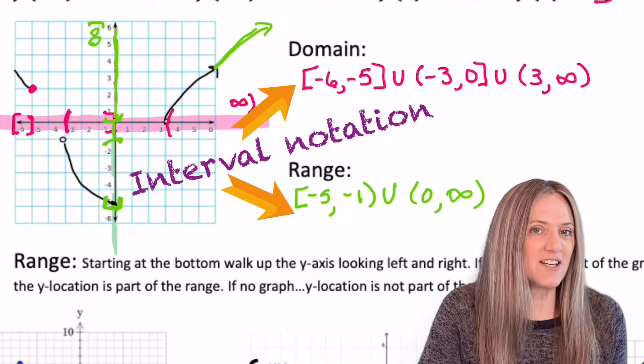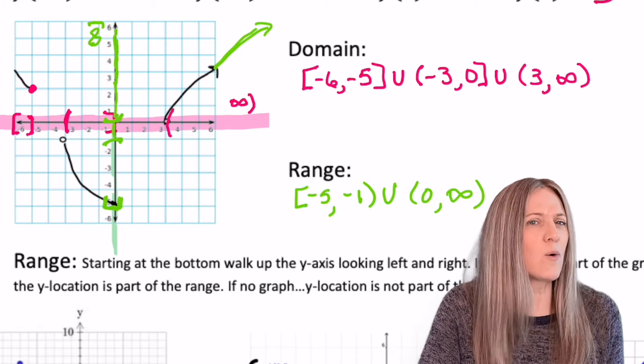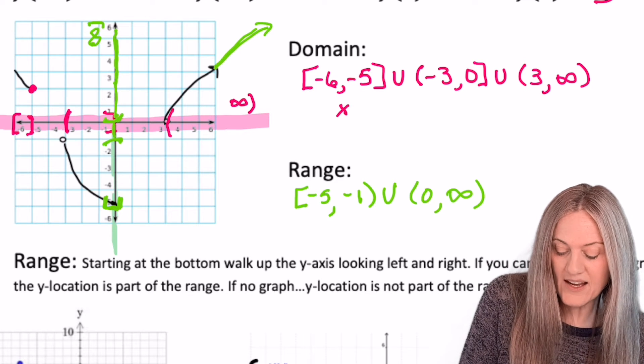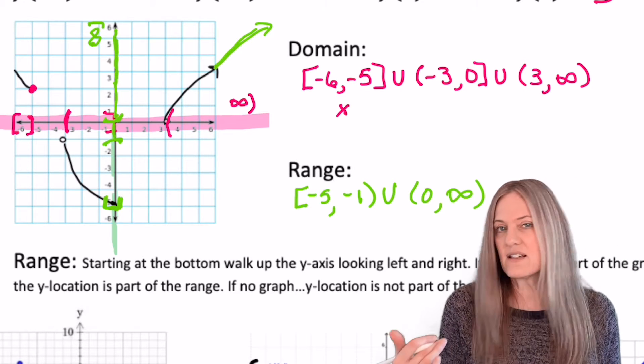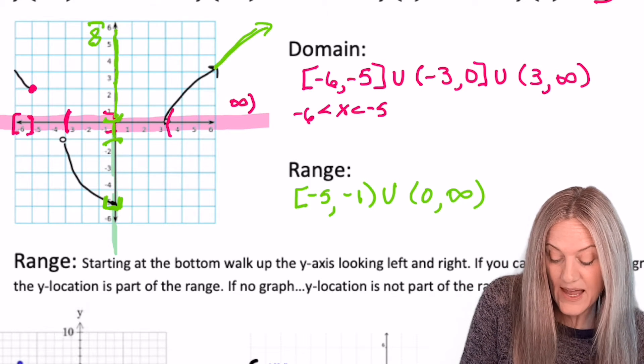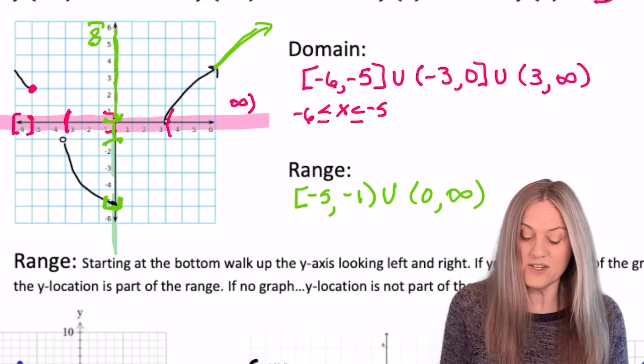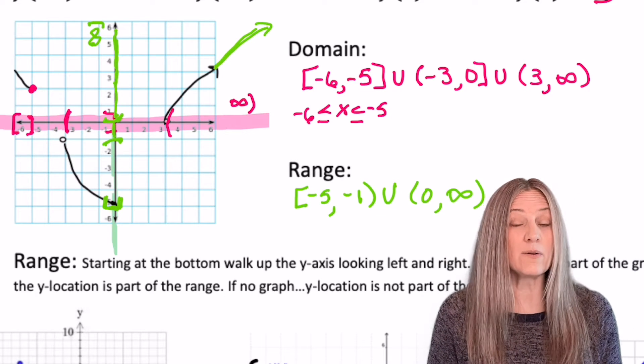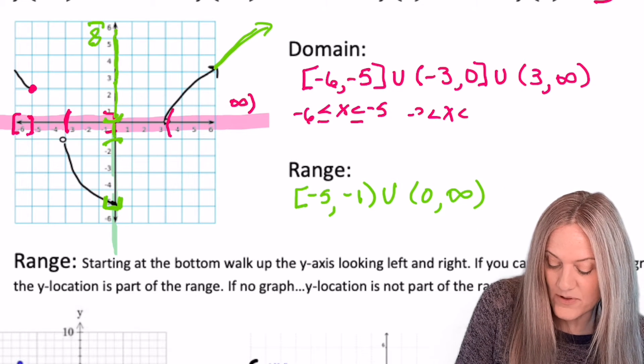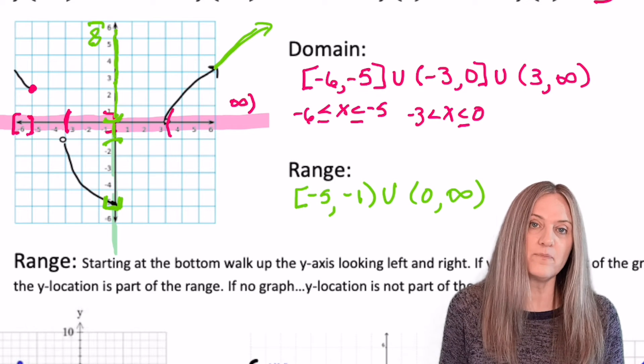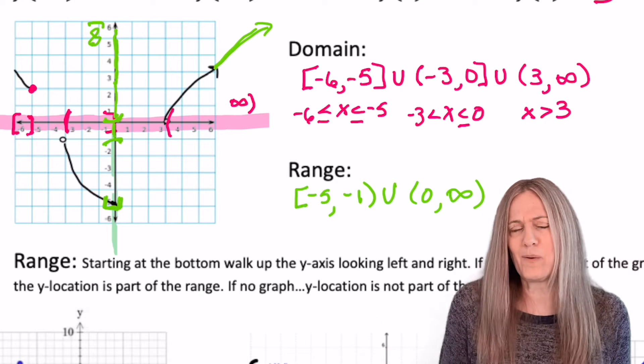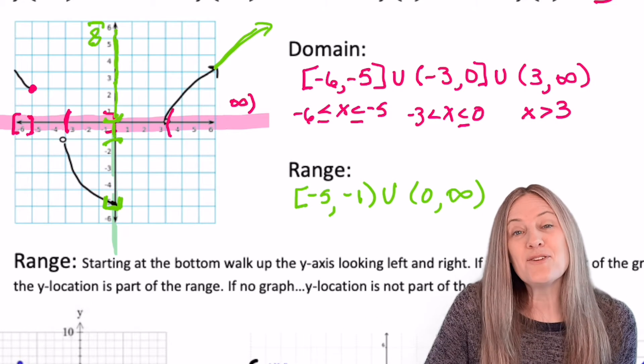Domain and range written in interval notation is great. But let's look at how to write it using inequalities. So on domain, if I want to write that first section, I'd have to describe it with x's and then less than or greater than. So in this case, it's negative 6 to negative 5 inclusive. So I would just say x is between negative 6 and negative 5. And because it's inclusive, I'll put equals. The next section, we see negative 3 to 0. Not inclusive on negative 3 but inclusive at 0. So x's between negative 3 to 0, inclusive of 0. The last piece, 3 to infinity, well then that's just x greater than 3. We wouldn't say between 3 and infinity. How about you give range a try? Write it using inequalities.